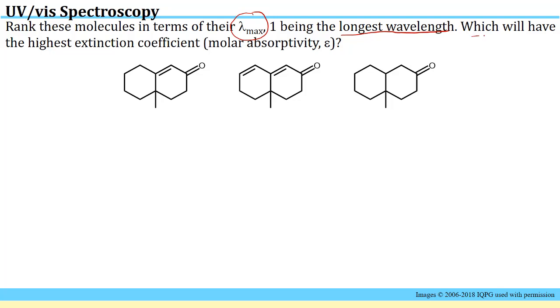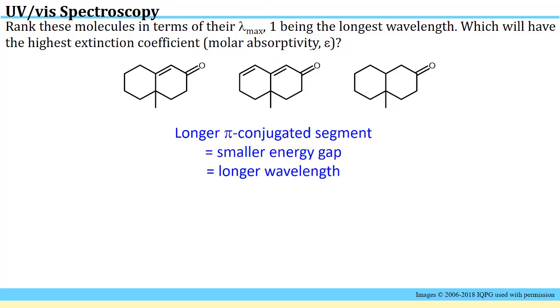This question asks us a follow-up: which will have the highest extinction coefficient or molar absorptivity? As we said in the previous question, we know that a longer pi conjugated segment leads to a smaller energy gap and that leads to a longer wavelength. Remember there's an inverse relationship between energy and wavelength. So the longest wavelength should correspond to the smallest energy gap and that should be the longest pi conjugated segment. The longest pi conjugated segment is in this molecule. Second longest would be here, and the shortest of course is just a single pi bond here.